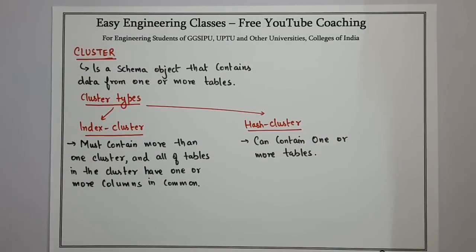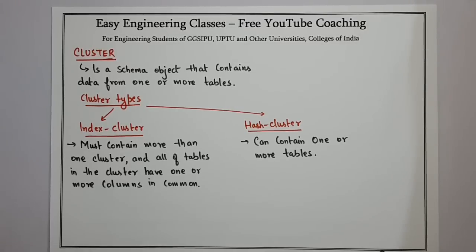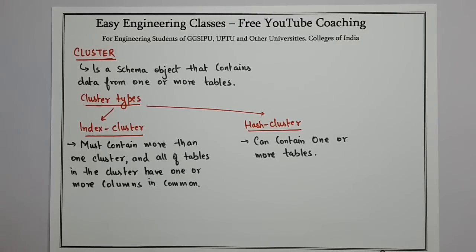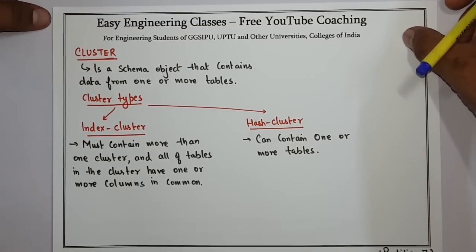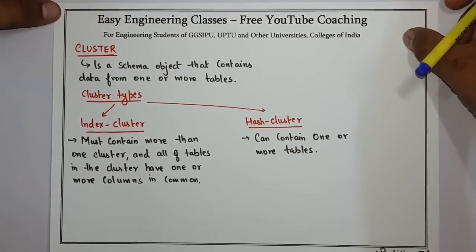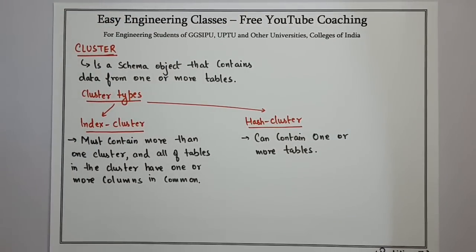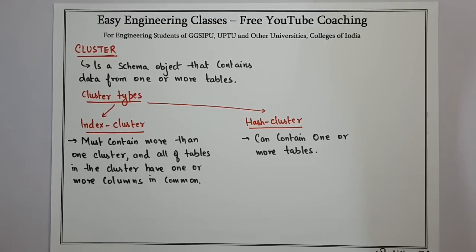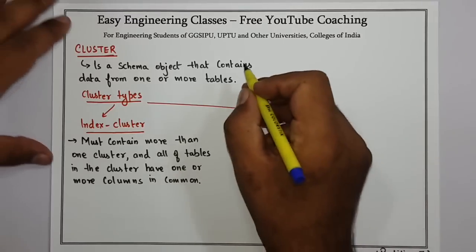Hello, today we will see about clusters in Oracle Database. A cluster is a schema object that contains data from one or more tables. Basically, a cluster is like a logical entity that contains schema objects like tables and rows, and it contains data from one or more tables, all of which